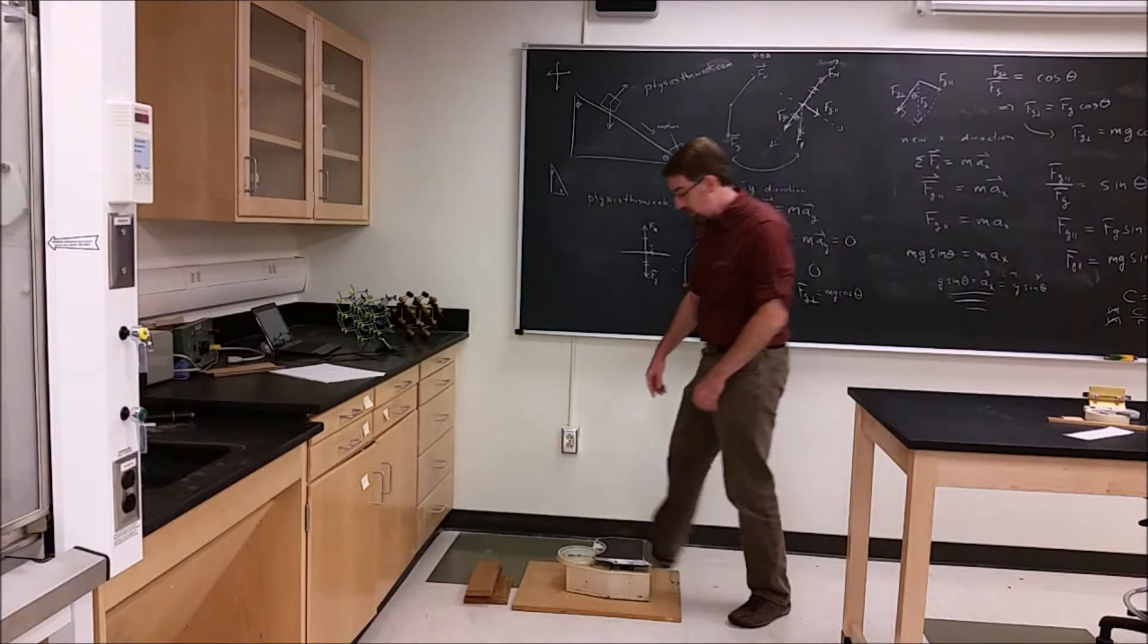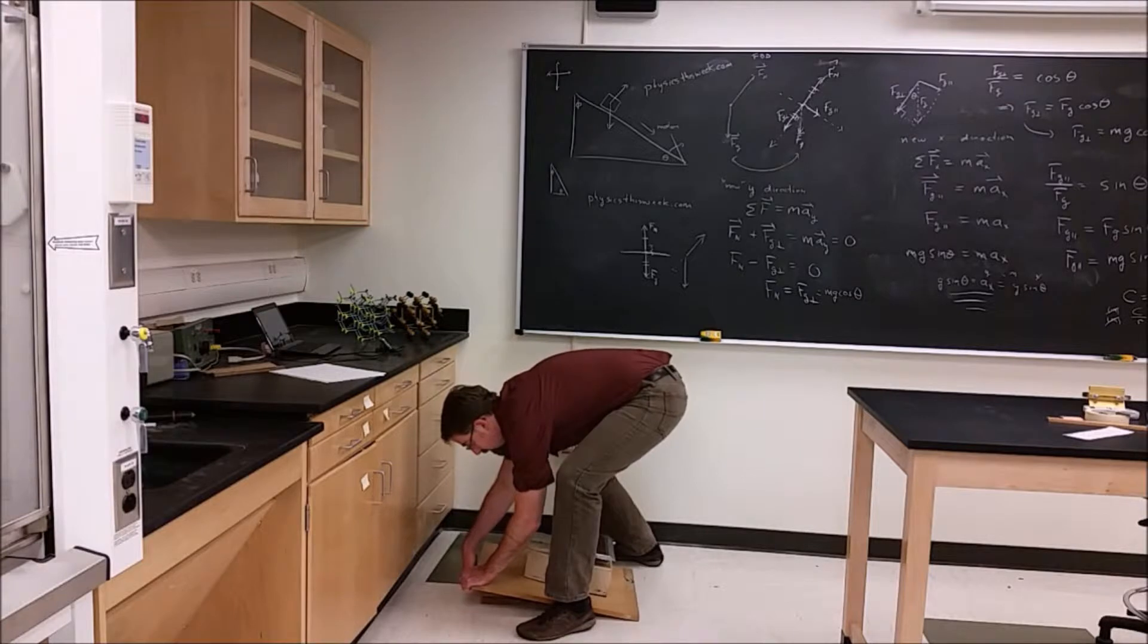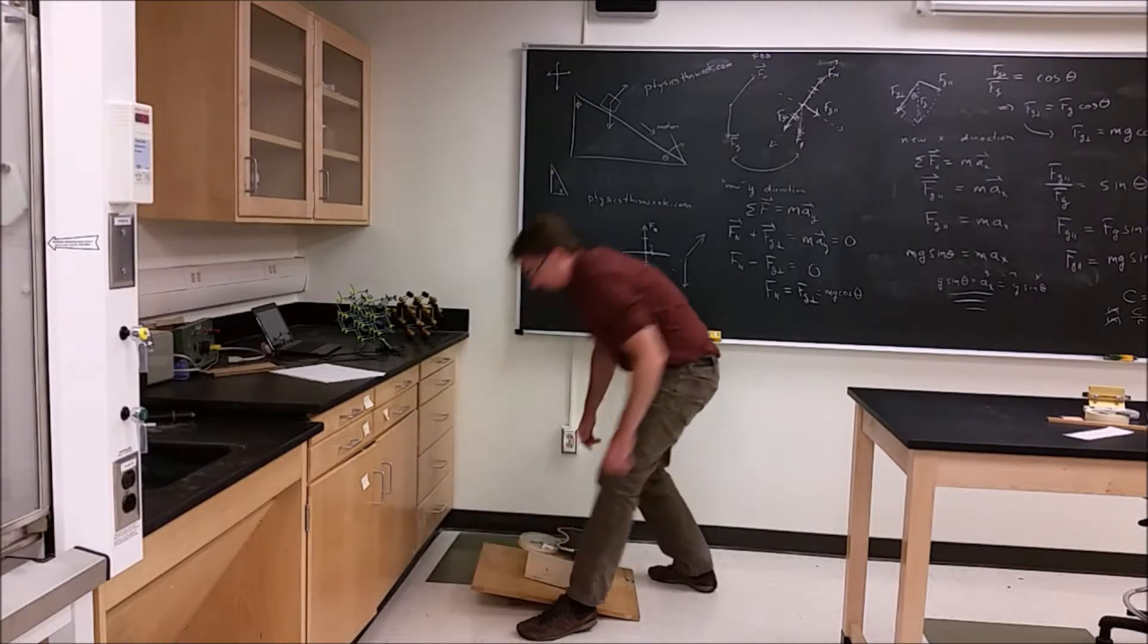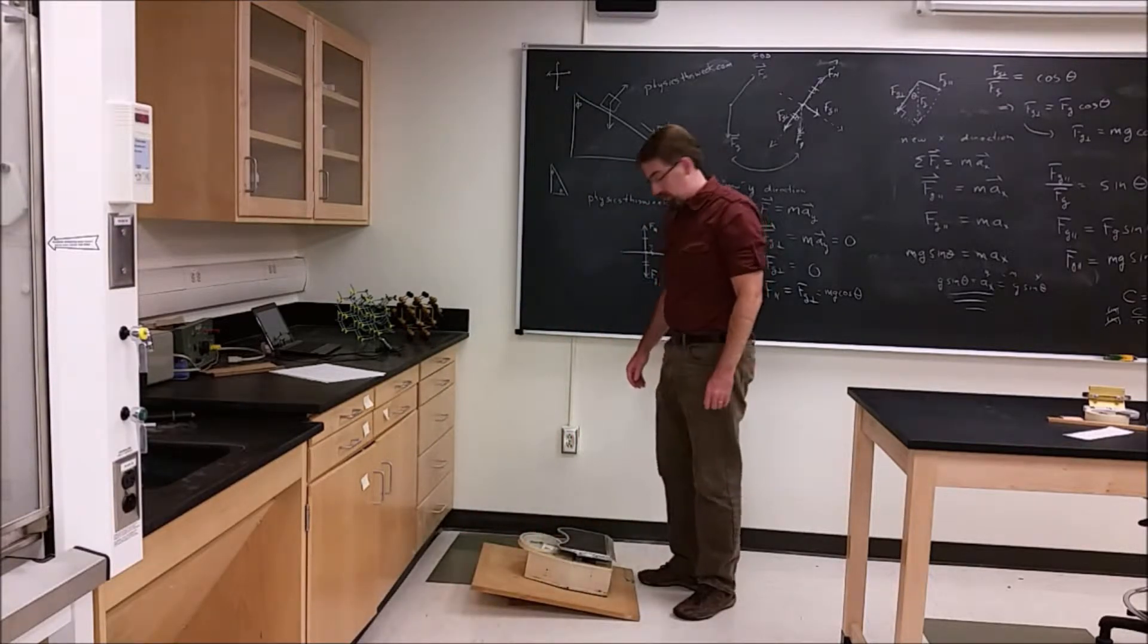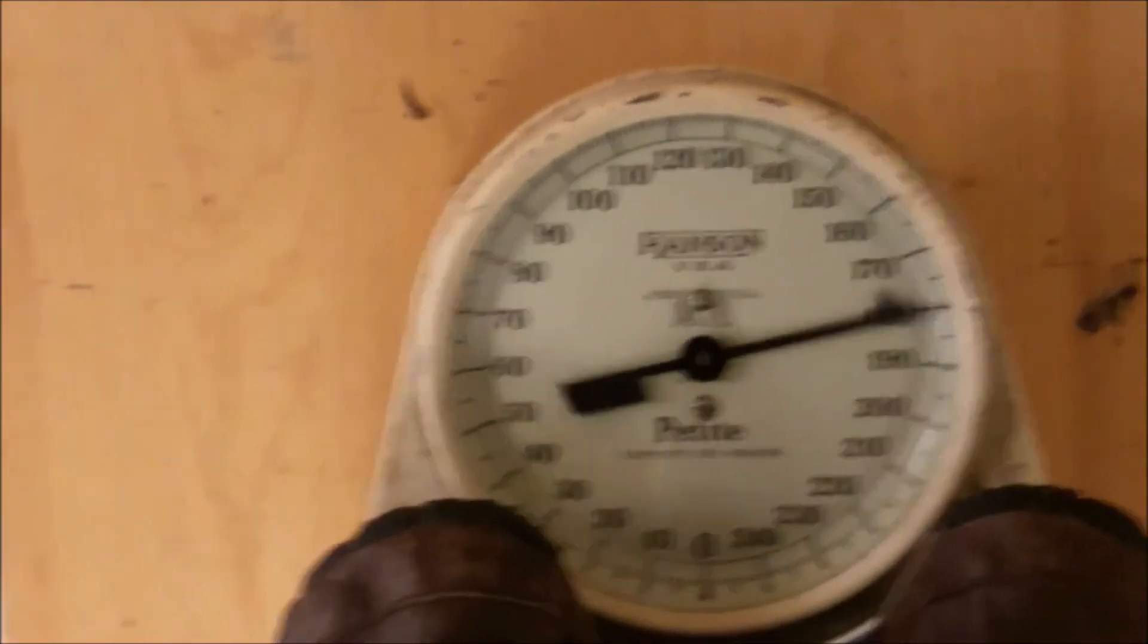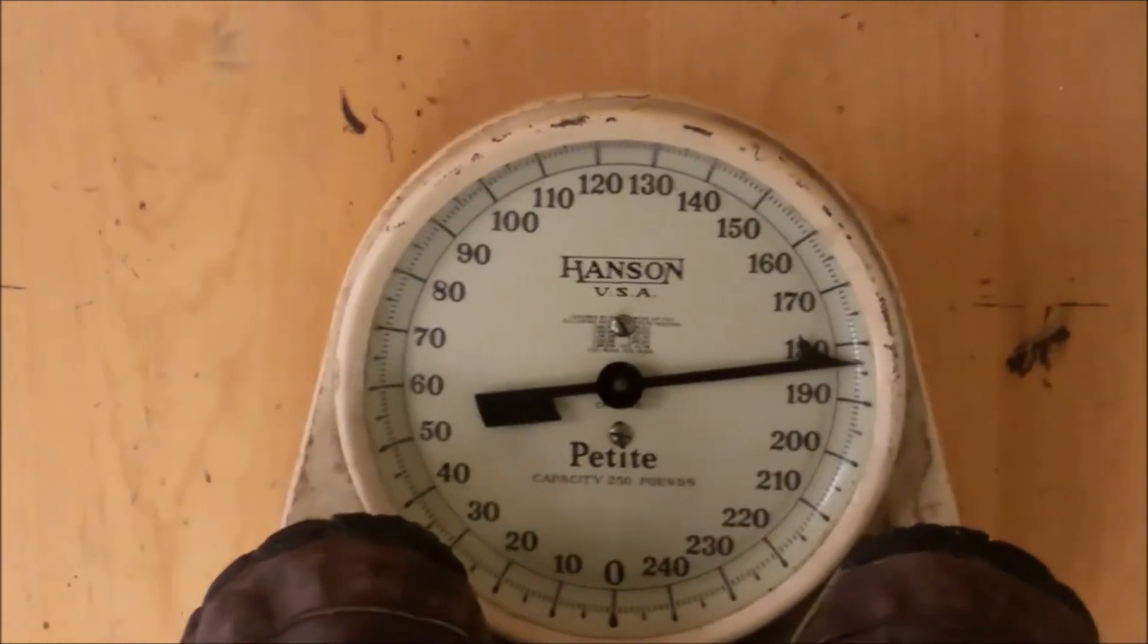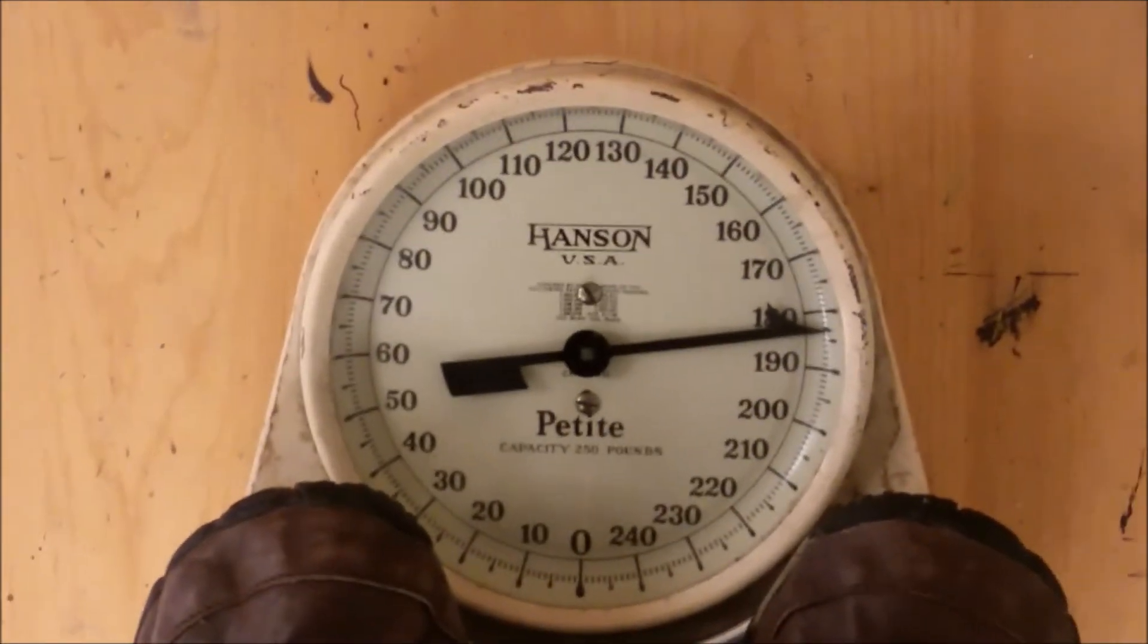If I put my scale on an incline, so just a little bit of a slope there, and I hop back up on the scale, you can now see that I'm just under 185 pounds. So, I just lost 5 pounds just like that.